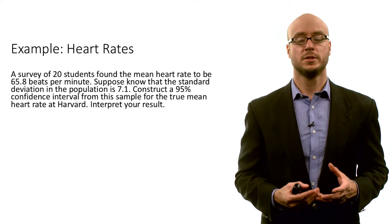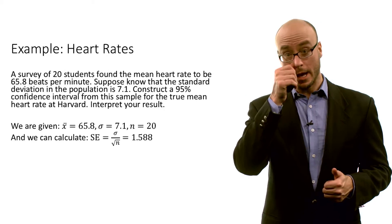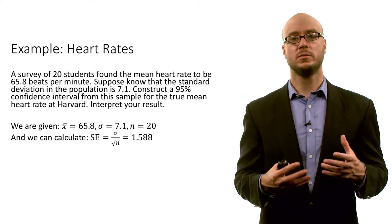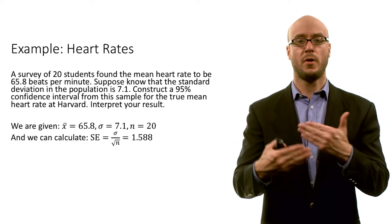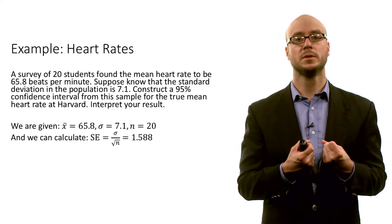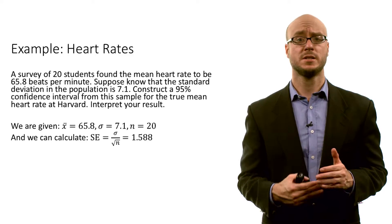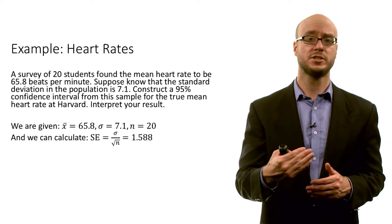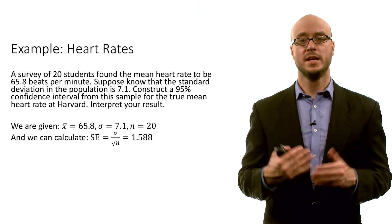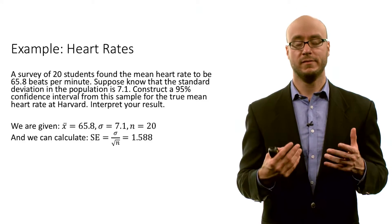Let's interpret the result. We're given a sample mean of 65.8 beats per minute, a population standard deviation of 7.1, and a sample size of 20. In this case, the population is the set of all Harvard students, and we just have a random sample of 20 students from Harvard. Let's calculate the standard error — the standard error is simply our population standard deviation divided by the square root of our sample size. When we do the calculation, we get a standard error of about 1.588.